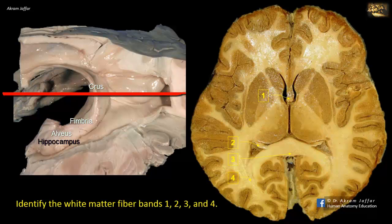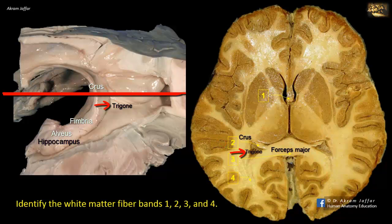In a horizontal section, the shape of the fibers forming the splenium is called forceps major, as appears in 3. You can see the crus at 2, at the region of the trigone of the lateral ventricle. The trigone marks the posterior end of the inferior horn of the lateral ventricle, where the hippocampus forms a floor. The crus of the fornix curves around the posterior end of the thalamus and joins its counterpart to form the body of the fornix.